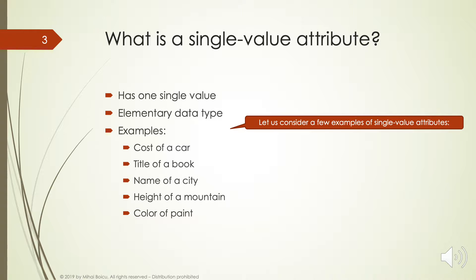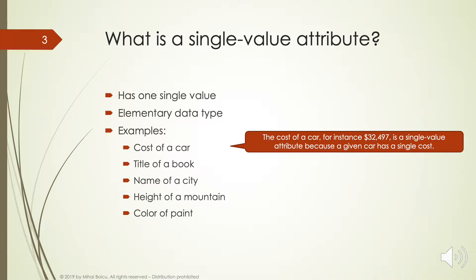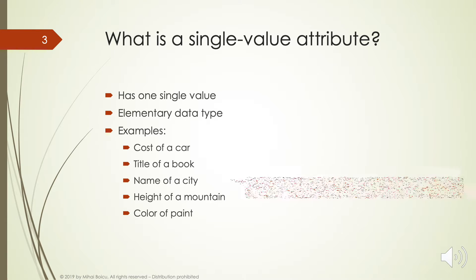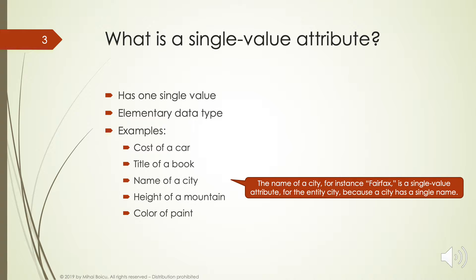Let us consider a few examples of single-value attributes. The cost of a car — for instance 32,497 — is a single-value attribute because a given car has a single cost. The title of a book — for instance Databases — is another single-value attribute because a book has a single title. The name of a city — for instance Fairfax — is a single-value attribute for the entity City because a city has a single name.